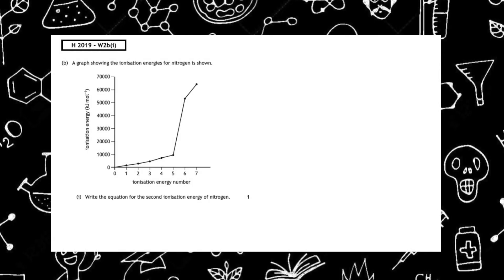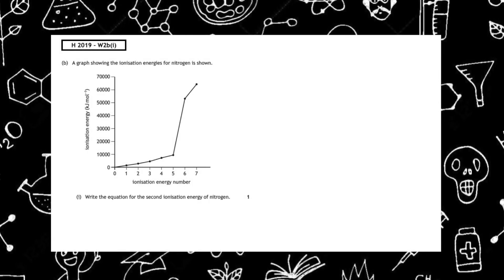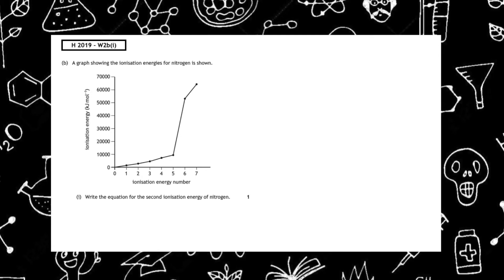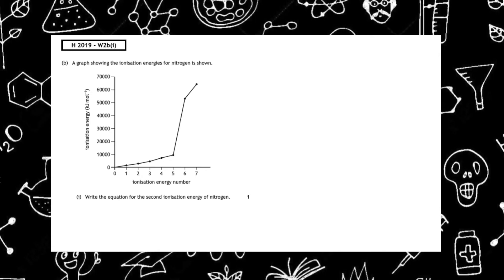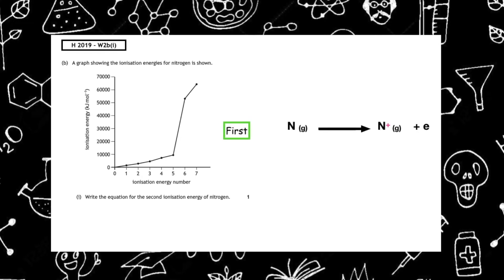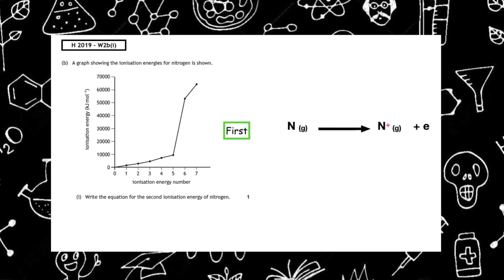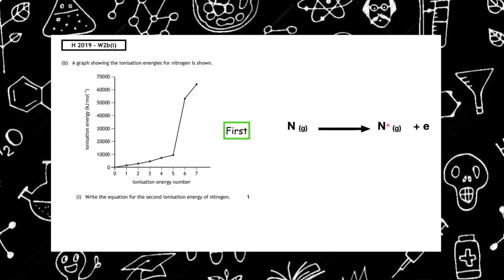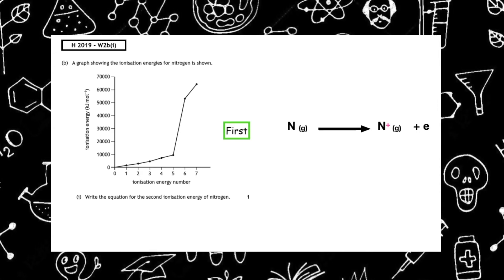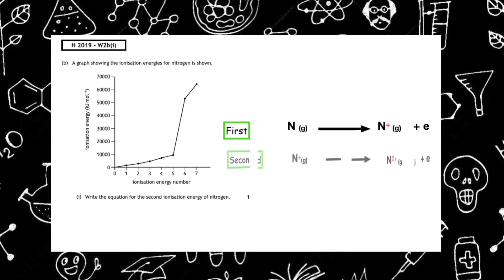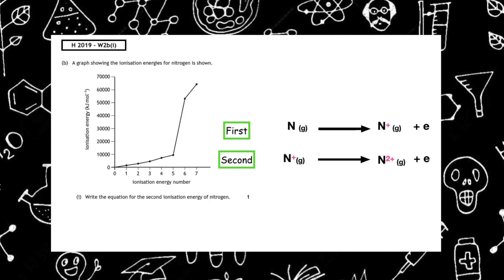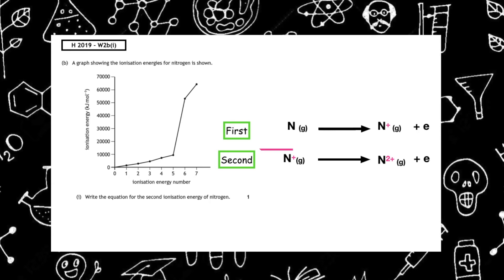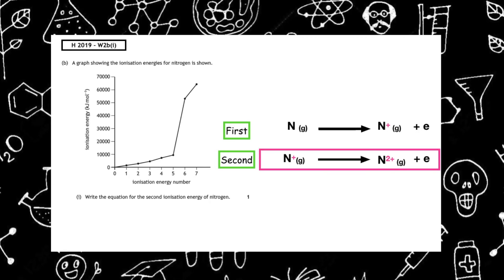The Higher 2019 written 2B part 1 asks you to write the equation for the second ionization energy of nitrogen. The first ionization energy: nitrogen as an atom in the gas state changes to N⁺(g) plus an electron. Therefore the second ionization energy: we take our N⁺(g) ion and write an arrow to N²⁺(g) plus an electron.